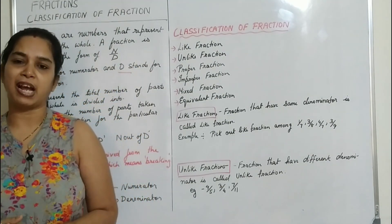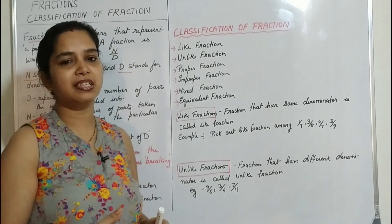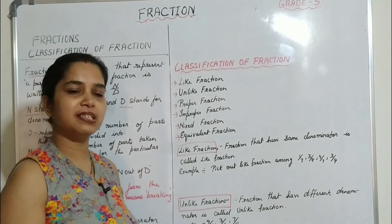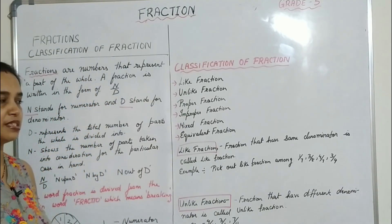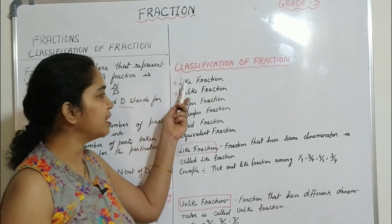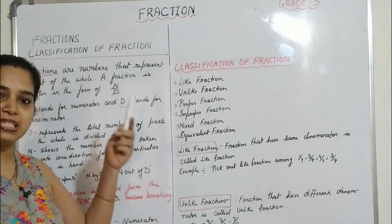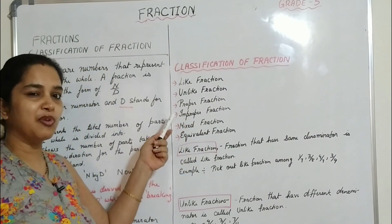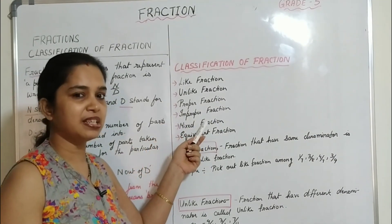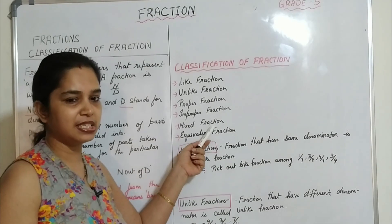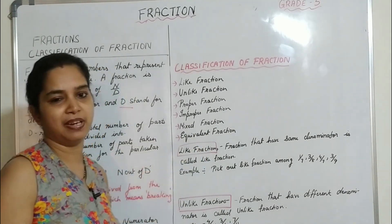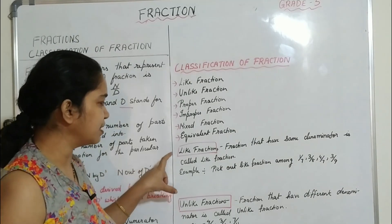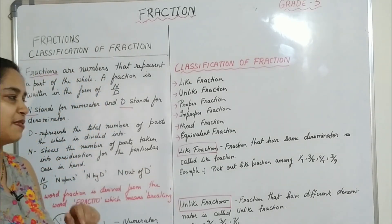Now we will talk about the classification of fractions. Fractions are divided into six major types: the first is like fractions, the second is unlike fractions, the third is proper fractions, the fourth is improper fractions, the fifth is mixed fractions, and the sixth is equivalent fractions. In today's session we will discuss like fractions and unlike fractions.